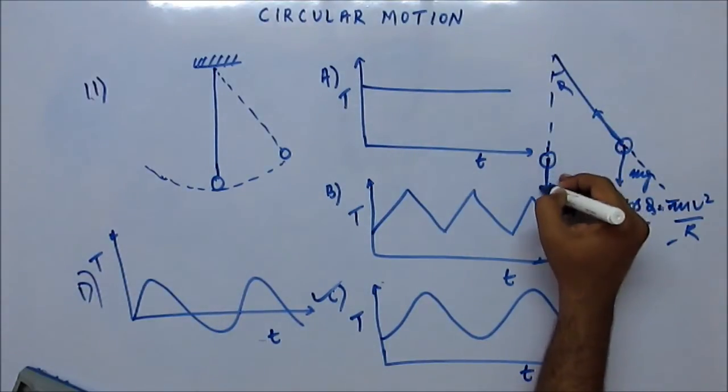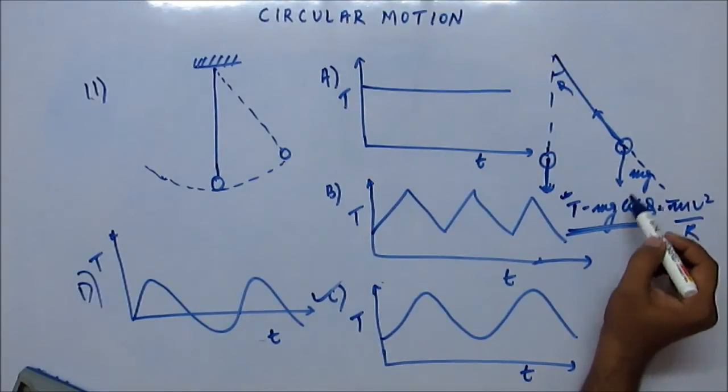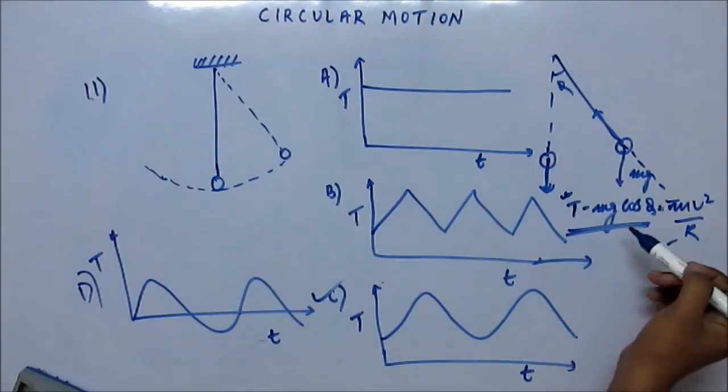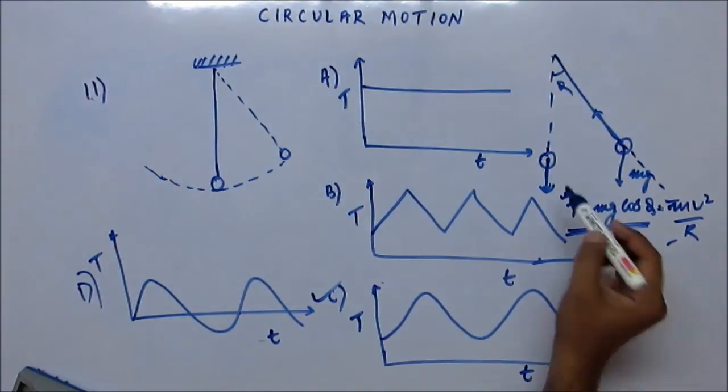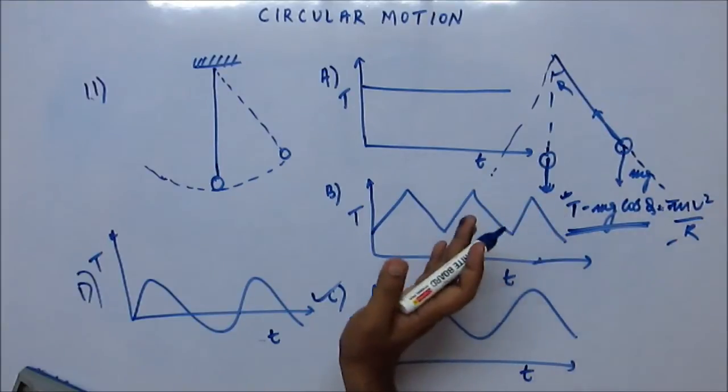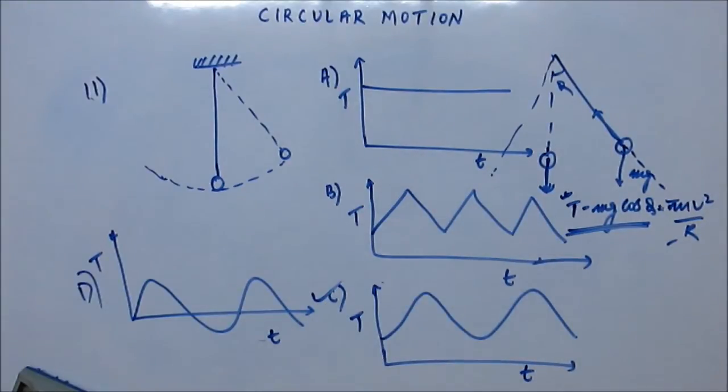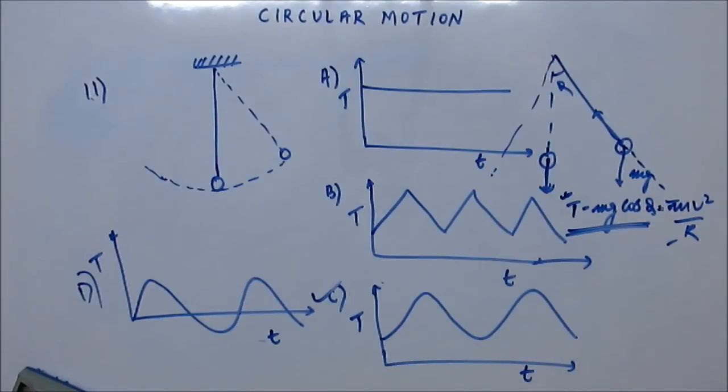When you come here, that is the point at which the velocity is maximum and the component of Mg against tension is also maximum. So this is the point at which the tension would be maximum. As you go on the other side, the component of Mg starts to decrease, velocity also starts to decrease, so the tension should also start to decrease.